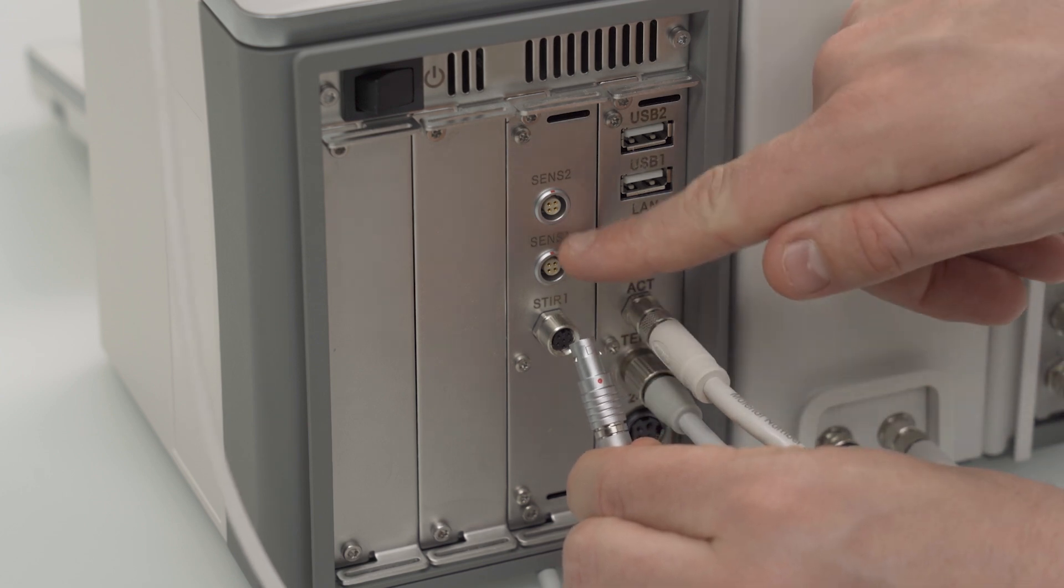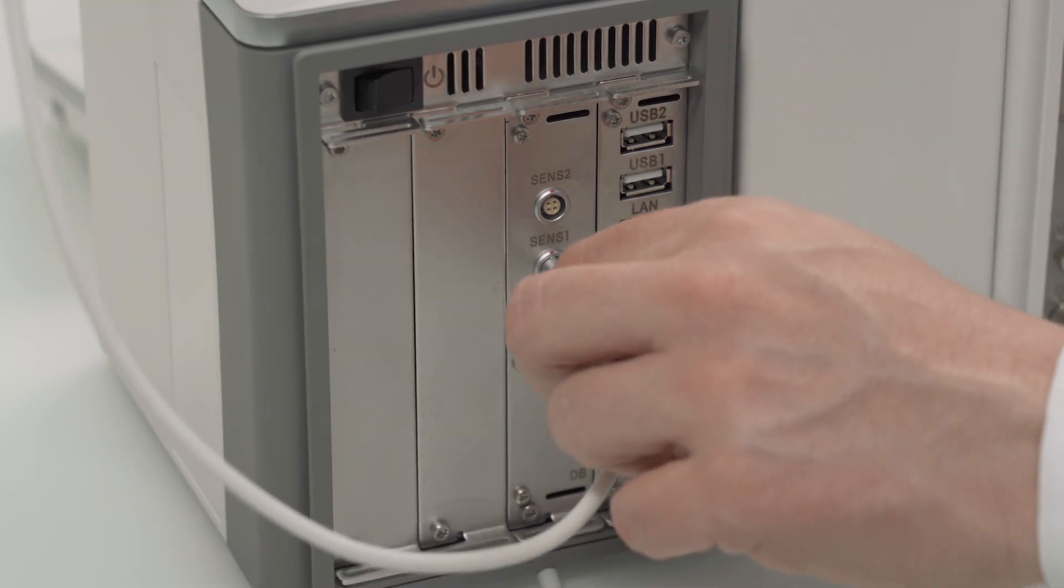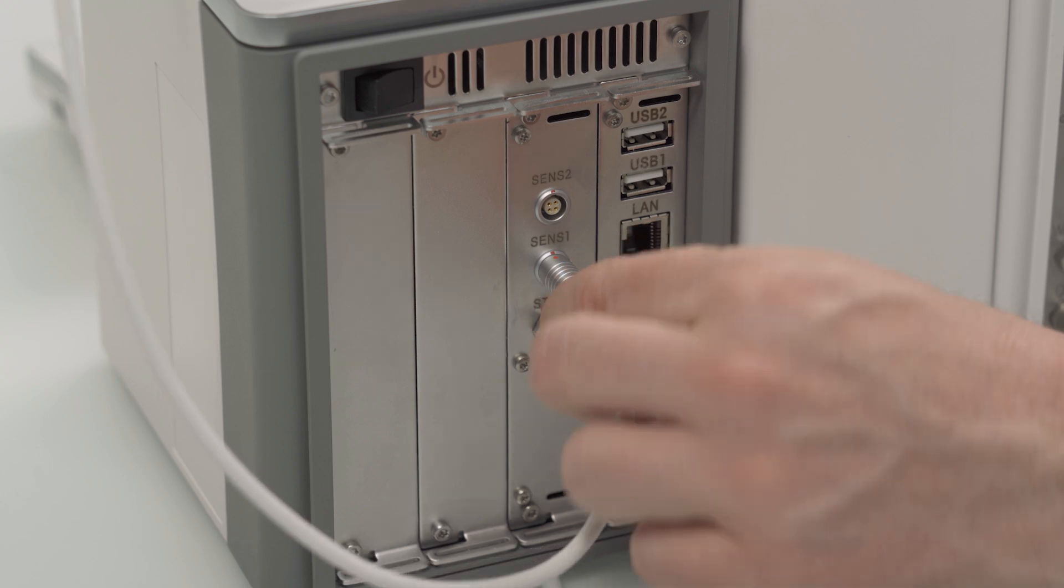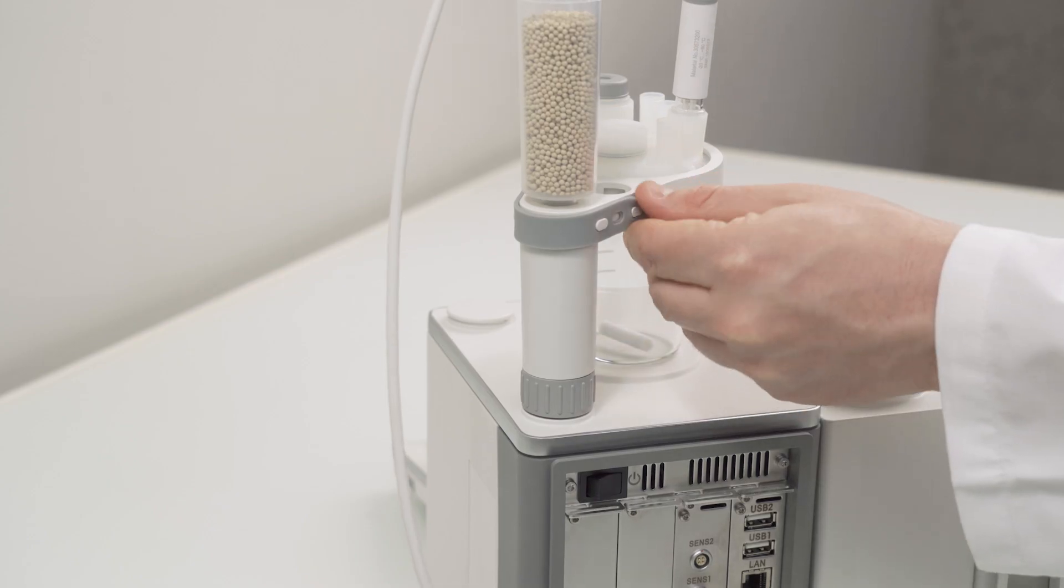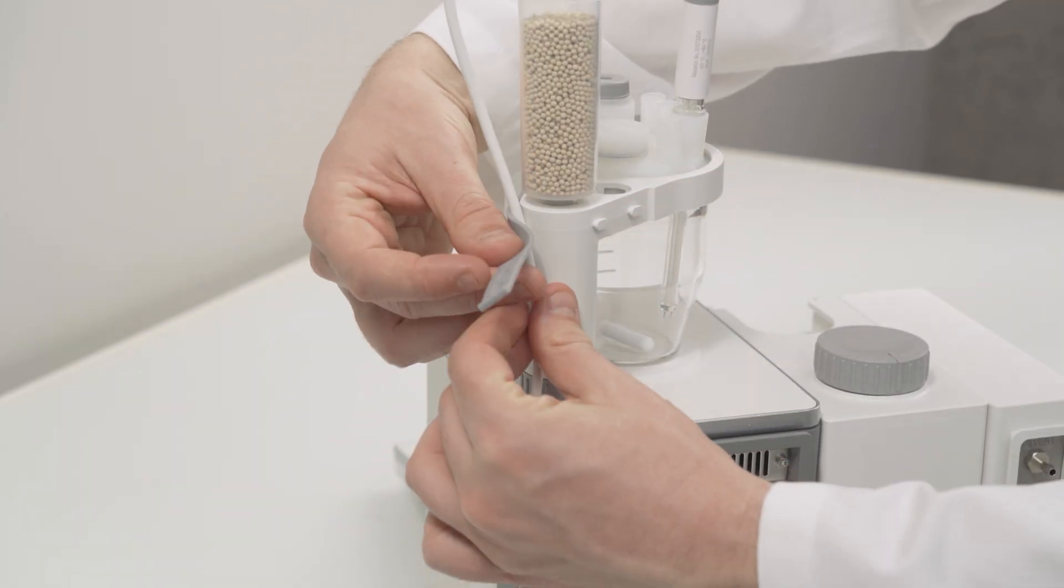Connect the other end of the sensor cable to one of the sensor sockets on the device board. Make sure to align the red dots before pushing it in. Then fix the cable to the titration arm with the rubber strap.